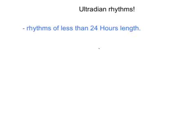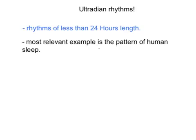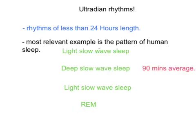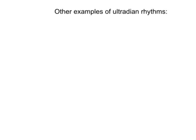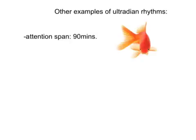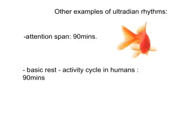Now we are going to talk about ultradian rhythms in more detail. These are rhythms of less than 24 hours in length. The most relevant example is the pattern of human sleep. During a night's sleep, we systematically move through different phases: we start at light slow-wave sleep, move into deep slow-wave sleep, back to light slow-wave sleep, and then into rapid eye movement sleep, called REM. One cycle of this takes on average 90 minutes. The control of this cycle involves a network of centres in the brain communicating through a variety of neurotransmitters. Studies also show that alertness and attention span in humans can vary with a periodicity of 90 minutes, and there is evidence for a basic rest-activity cycle in human behaviour with the same 90-minute periodicity.